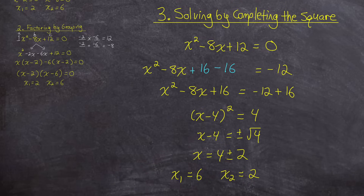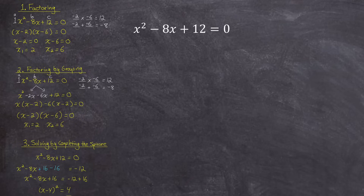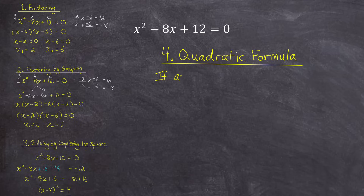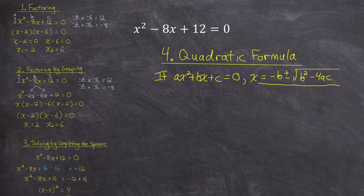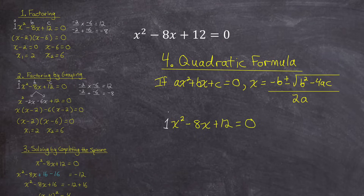That method is quite time consuming, which is why the next method — solving using the quadratic formula — is so useful. If you have the general standard form ax squared plus bx plus c equals 0 and solve by completing the square, it rearranges into x equals negative b plus or minus the square root of b squared minus 4ac, all divided by 2a. So instead of going through that whole process, we can just take our values — a equals 1, b equals negative 8, c equals 12 — and substitute them into the quadratic formula.